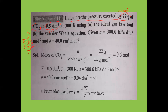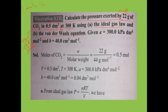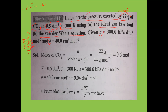Van der Waals constants A and B are given for CO2. B value given in cm³ must be converted to liters: 1 cm³ = 1/1000 liter, so 40 cm³ = 40/1000 = 0.04 liters·mol⁻¹. Calculate pressure using both ideal gas equation and Van der Waals equation.